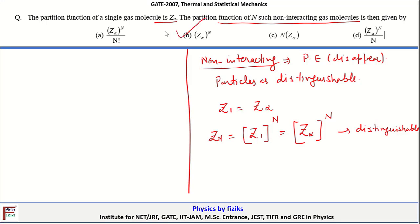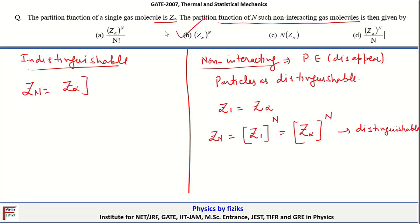However, when particles are indistinguishable, for a system of indistinguishable particles the answer would be Z_N equal to Z-alpha to the power N divided by N-factorial. But in the present case treating particles as distinguishable, our answer is option B.